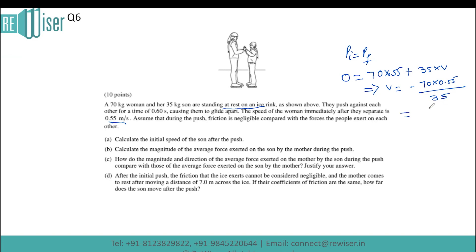After calculation, we get the value as 1.1 meters per second. This is the initial speed of the son after the push. The negative sign indicates they are moving in opposite directions because they are pushing against each other. You can write the answer as positive 1.1 meters per second in magnitude.